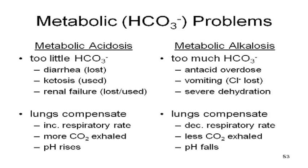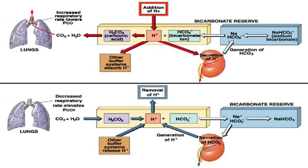Metabolic alkalosis — the most common cause is too many antacids. Someone with chronic indigestion taking antacid after antacid is basically filling their body with bicarbonate and becoming alkaline. You can also get metabolic alkalosis from vomiting, because if you're vomiting you're losing hydrochloric acid. If it's a respiratory problem, the kidneys try to compensate. If it's a metabolic problem, the lungs try to compensate.